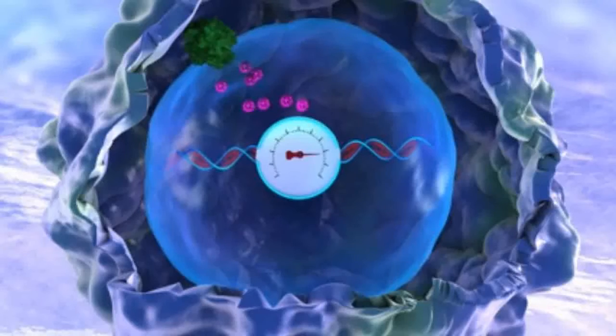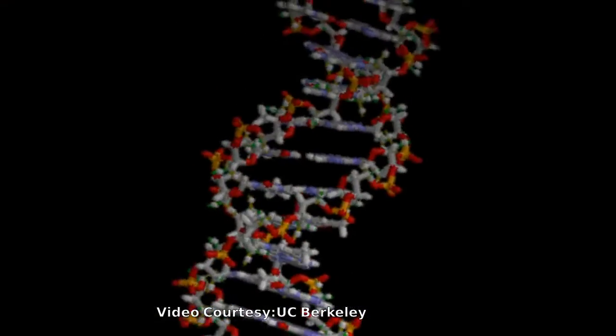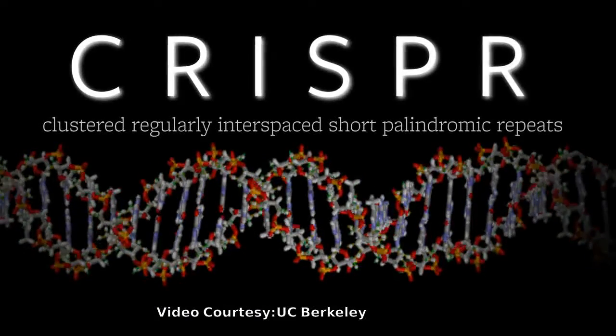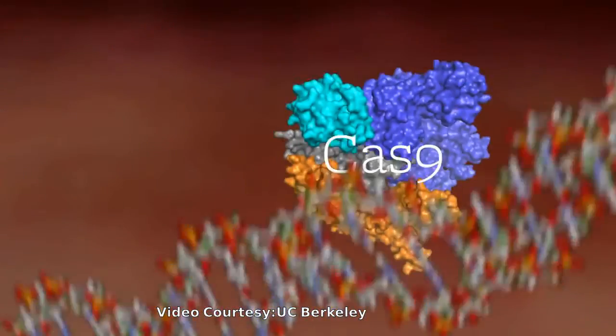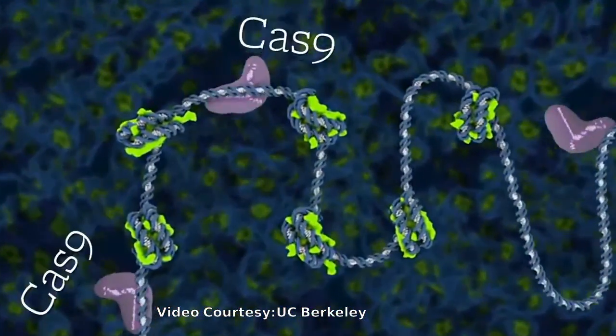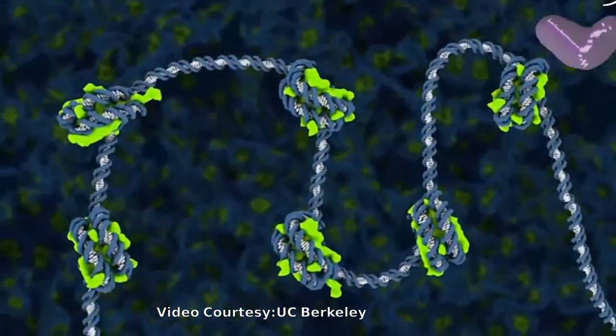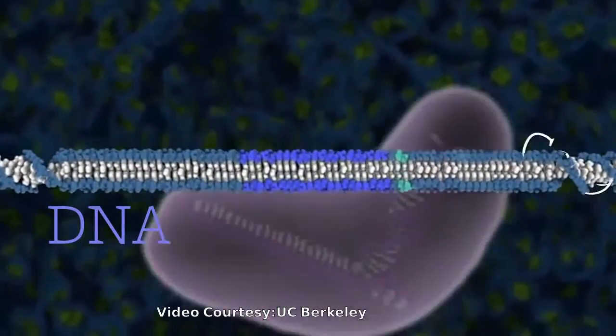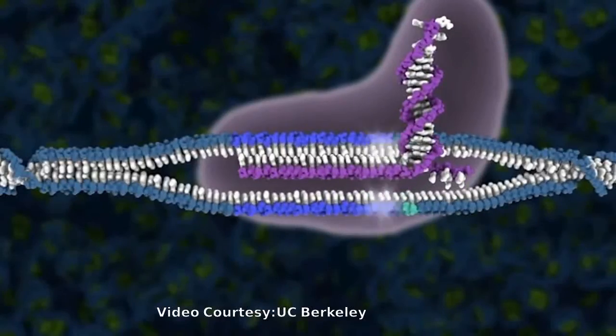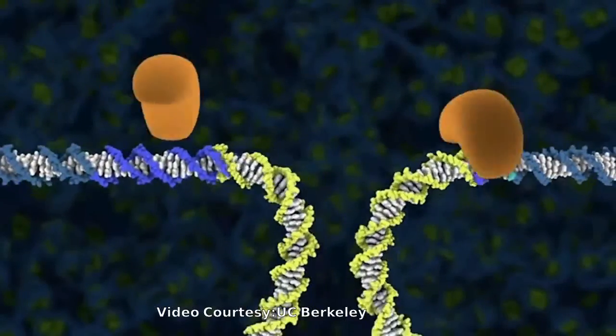The new MIT approach is based on genome editing system known as CRISPR, which consists of a DNA-cutting enzyme called Cas9, and a short RNA strand that guides the enzyme to a specific area of the genome, directing Cas9 where to make its cut. CRISPR is widely used for gene editing, but the MIT team decided to adapt it for memory storage.